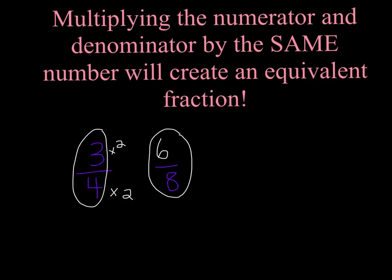For example, if I had two-fifths equals how many fifteenths, you have to ask yourself: five times what equals fifteen? I know my multiples of five — five, ten, fifteen — so five times three is fifteen. Therefore, two times three is six. So two-fifths is equivalent to six-fifteenths.